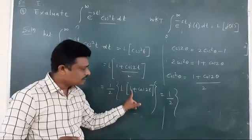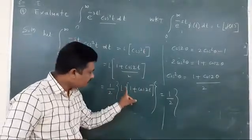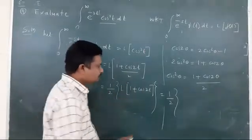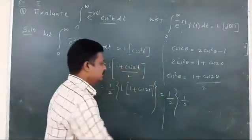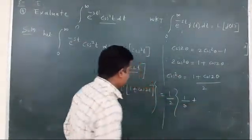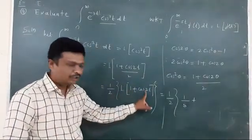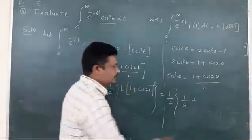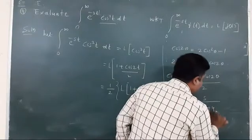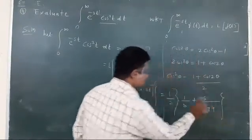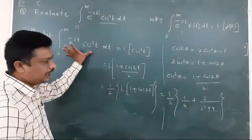I will apply Laplace transform to both terms separately. L of 1 equals 1 upon s, and L of cos 2t equals s upon s squared plus 4. So 1 upon 2 times (1 upon s plus s upon s squared plus 4) is the value of this integration.